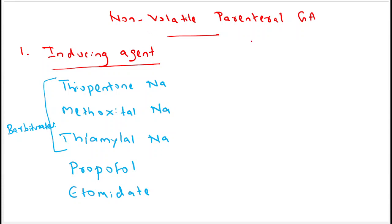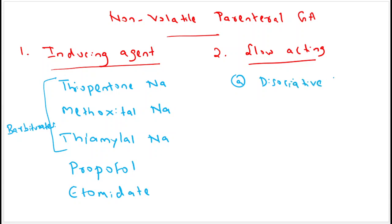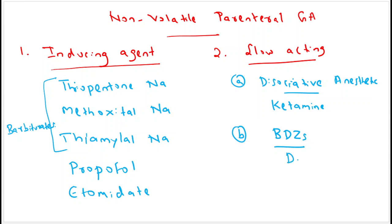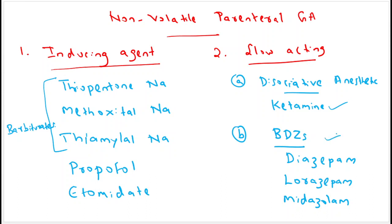The second category under non-volatile parenteral anesthetics are the slow acting drugs. The examples include dissociative anesthetics — the main example being ketamine — and benzodiazepine drugs (BDZ), with examples being diazepam, lorazepam, and midazolam. Ketamine and benzodiazepines come under the slow acting category.